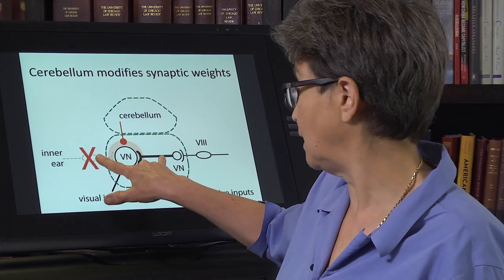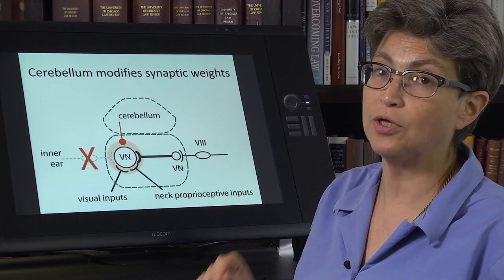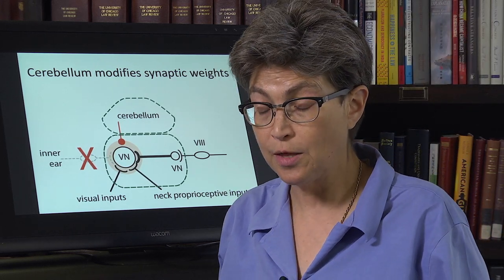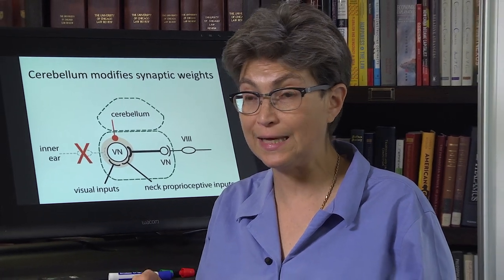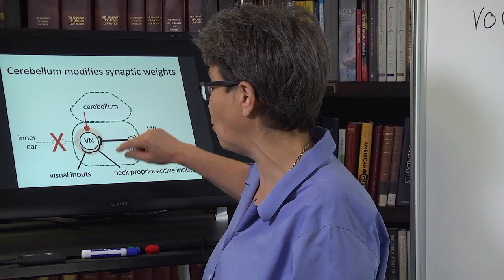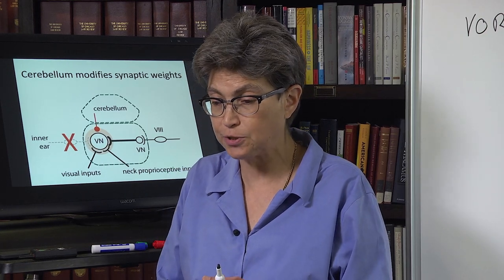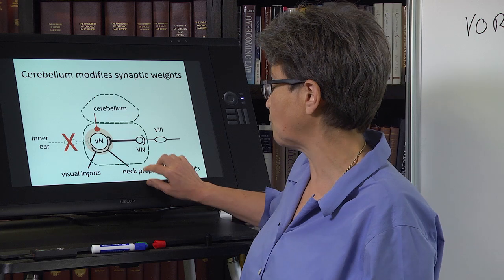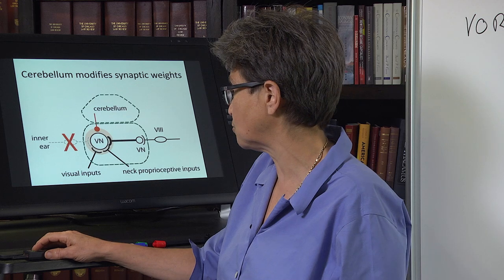A person who has lost vestibular function — if they're in the dark, things are not going to work well. Even in the light, if they lose visual inputs and only have neck proprioceptive inputs, they can accomplish something but not as much. This is a much weaker corrective measure. Vision is really how vestibular function gets corrected normally.